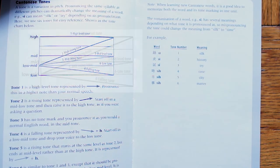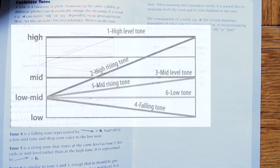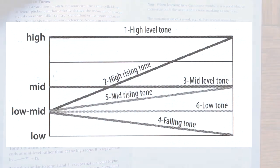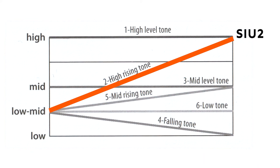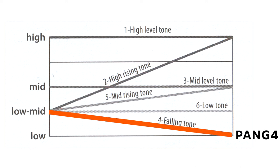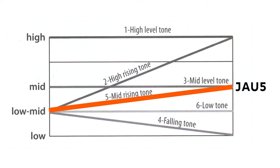The numbers refer to the tone that is placed on the syllable. In this example, we would pronounce 'siu' with a high rising tone, 'pang' with a falling tone, and 'yao' with a mid rising tone.